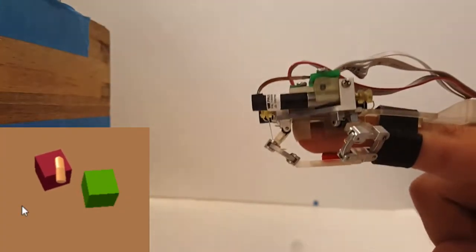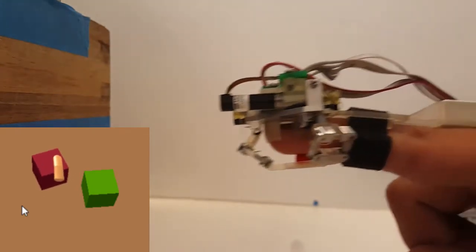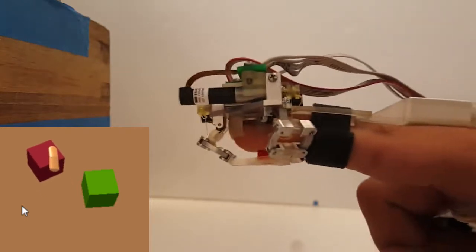When pressing into an object, the user can feel the object pushing back. When sliding the object along a table, the friction forces can be felt moving longitudinally against the finger.